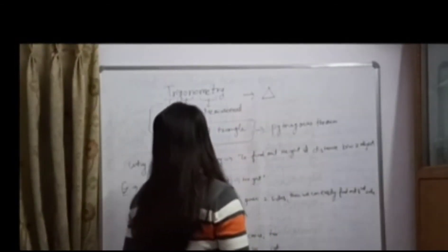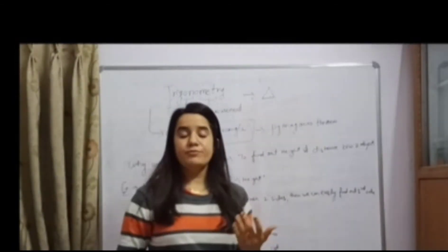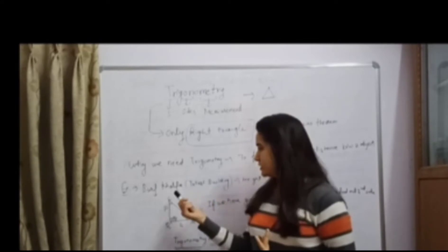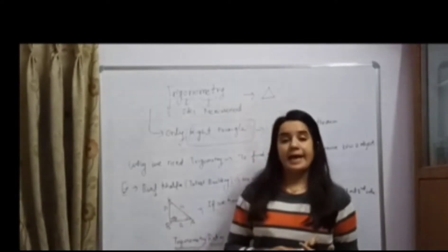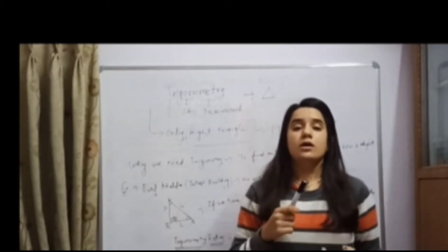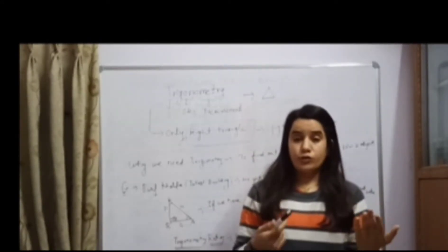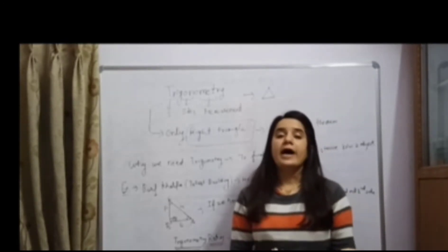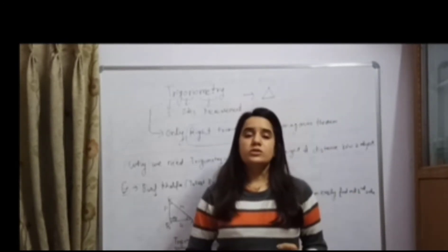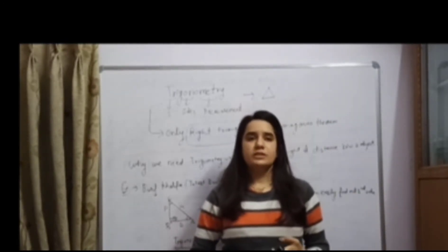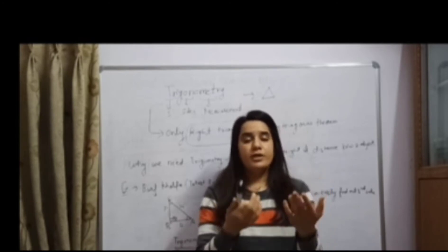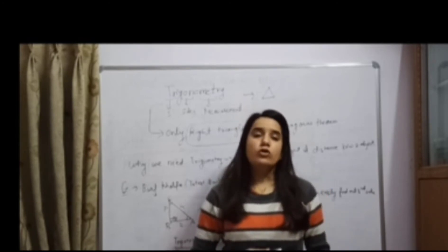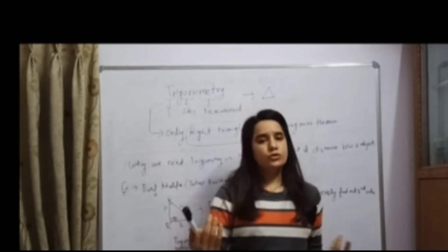For example, if you want to find out the height of Burj Khalifa — that is the tallest building — or if you want to find out the height of Qutub Minar, trigonometry is the only branch which will enable you to find out the height of any object or the distance between two objects.